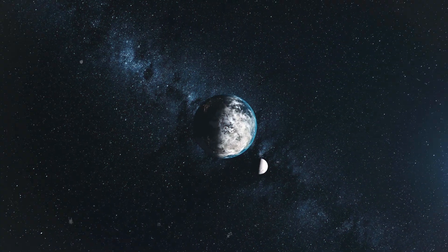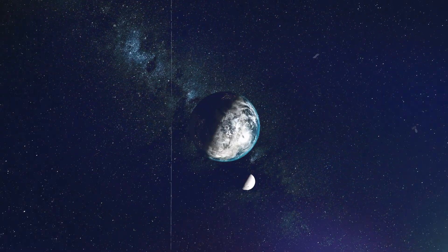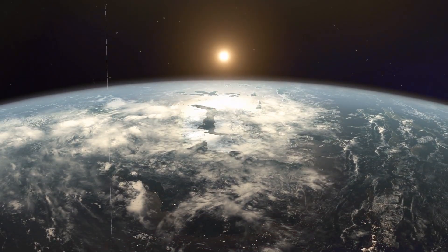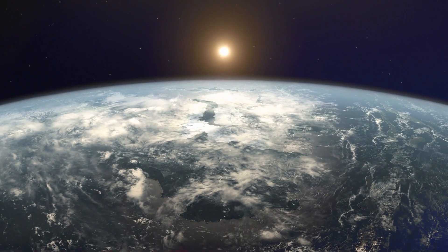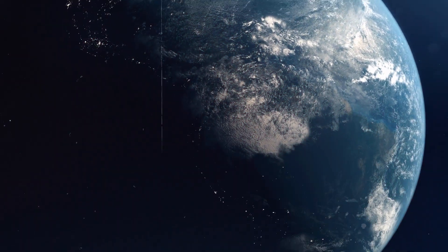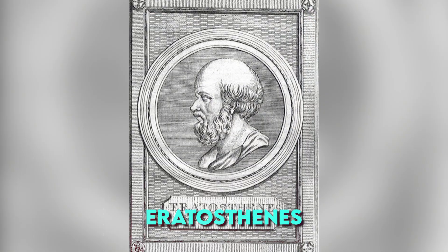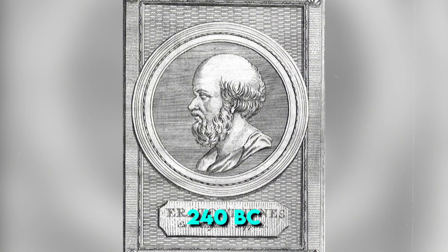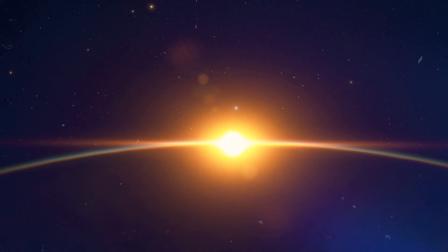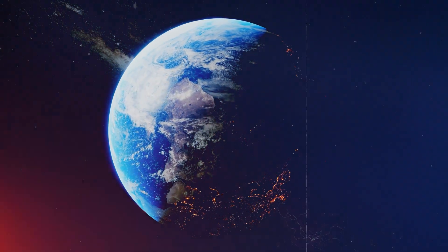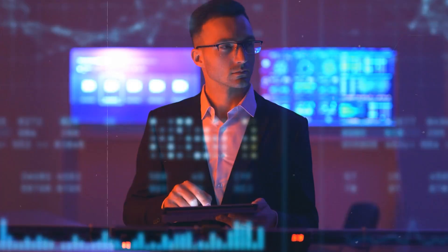Moreover, during lunar eclipses, the Earth's shadow on the Moon revealed a circular shape, further supporting the idea of a spherical Earth. One of the earliest estimates of Earth's size came from the ancient Greek scholar Eratosthenes around 240 BC. By measuring the angle of the sun's rays at different locations, Eratosthenes calculated Earth's circumference with surprising accuracy, coming remarkably close to modern measurements.